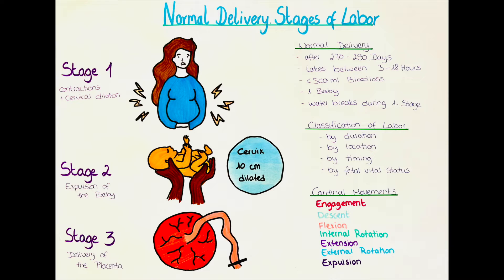The first stage of labor is characterized by uterine preparation, the loosening and expulsion of the mucous plug of the cervix, contractions of the uterus, and an increase of the intrauterine pressure with subsequent membrane rupture. The rupture of the membranes — also known as the water breaking — happens when the amniotic sac bursts and the amniotic fluid leaks out. The amniotic fluid should be clear and odorless. If it is green in color and has a foul odor, it indicates that meconium — the baby's first poop — is present in the amniotic fluid, which is an indicator for fetal distress. The first stage is also referred to as the cervical stage, as the cervix effaces and dilates.